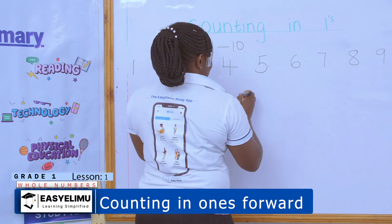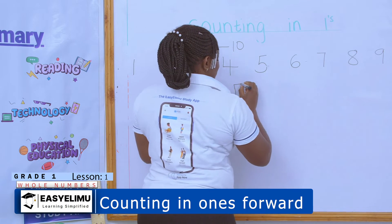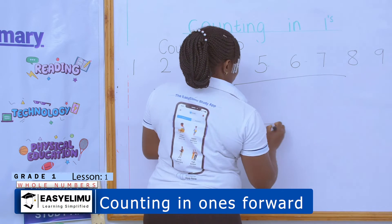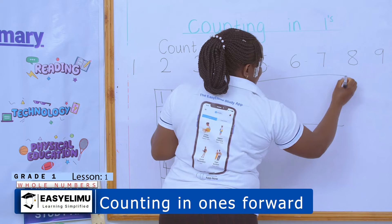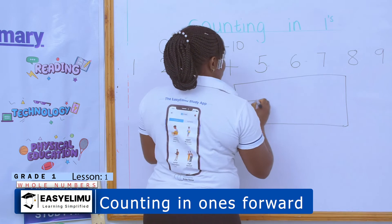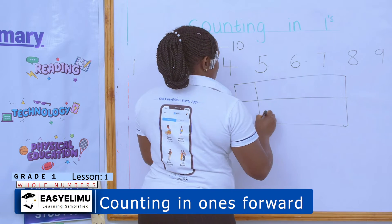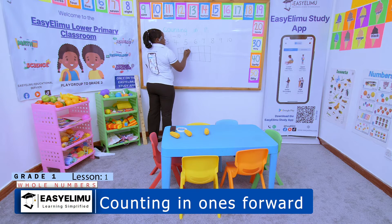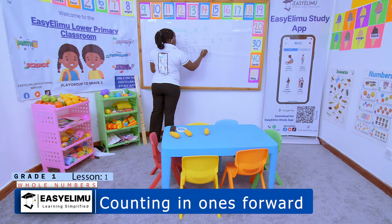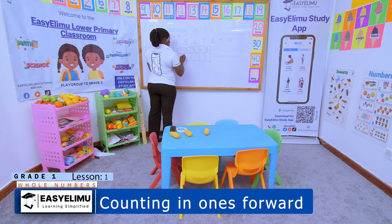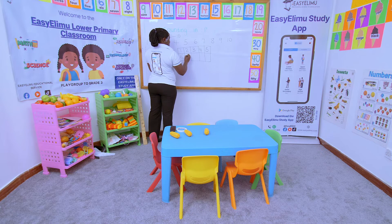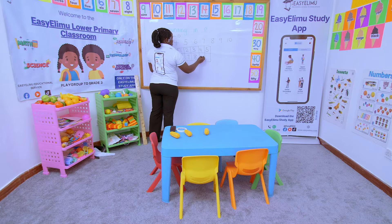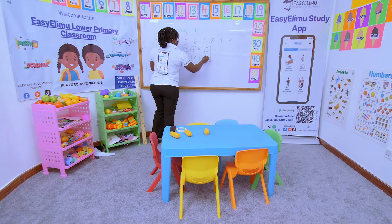The block can also be changed and it now sits horizontally on the floor like this — it is still the same block. So one, it is one, two, three, four, five, six, seven, eight, nine, ten.